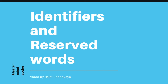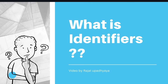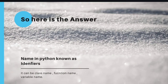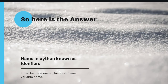The first question is: what is an identifier? Here is the definition — a name in Python is known as an identifier. It can be a class name, function name, or variable name. Let me explain this in my own words. Suppose my name is Rajat Upadhyay — that means my identification is Rajat Upadhyay. To identify anything, we give some name to that particular thing.